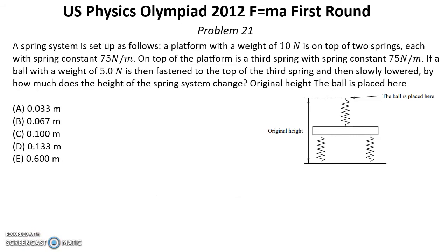Problem number 21. A spring system is set up as follows: A platform with a weight of 10 N is on top of two springs, each with spring constant 75 N per meter. On top of the platform is a third spring with spring constant 75 N per meter. If a ball with a weight of 5 N is fastened to the top of the third spring and then slowly lowered, by how much does the height of the spring system change?